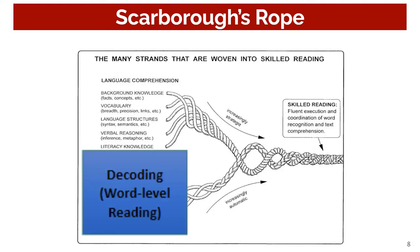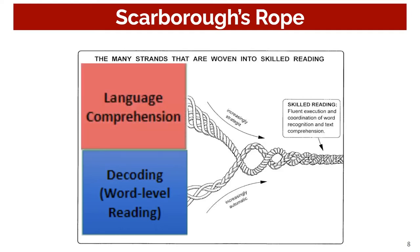Now let's shift to the language comprehension component—the top part of the rope. The subskills of language comprehension consist of background knowledge, vocabulary, language structures, verbal reasoning, and literacy knowledge. Understanding these subskills helps teachers understand what must take place during instruction. Notice how the strands of the language comprehension subskills have a spiral effect, because these subskills are considered increasingly strategic. With all this in mind, we know the simple view of reading is not so simple. A skilled reader can decode print effortlessly, extract meaning, and make connections between new ideas within the text and existing knowledge.